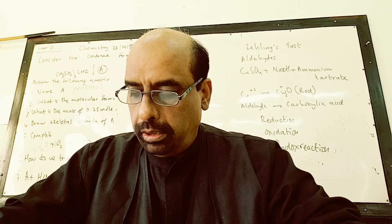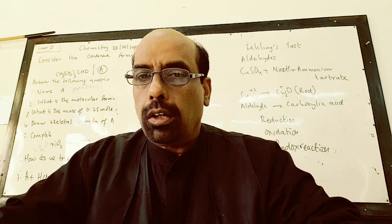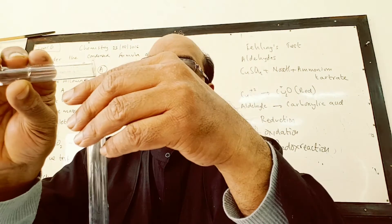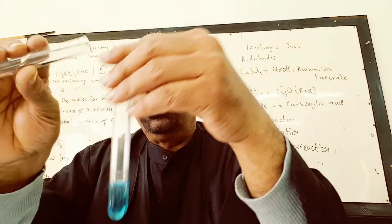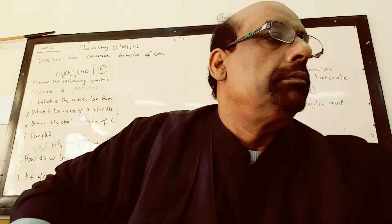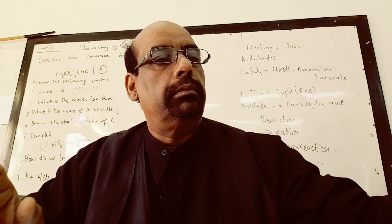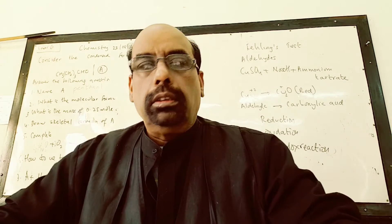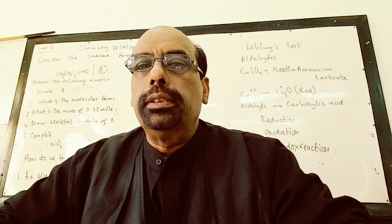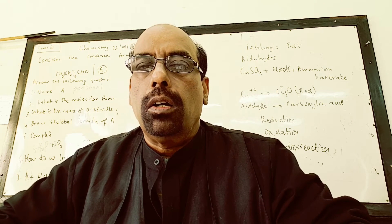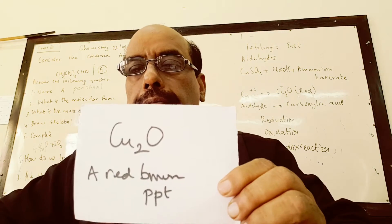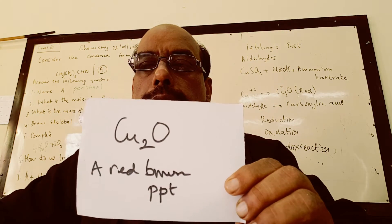The aldehyde is oxidized to a carboxylic acid. So if I take Fehling's solution, add an aldehyde, and warm or boil the mixture for some time, a reaction takes place: copper(II) is reduced to copper(I), and the aldehyde is oxidized to a carboxylic acid. A redox reaction takes place. The red-brown solid is copper(I) oxide.